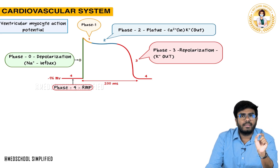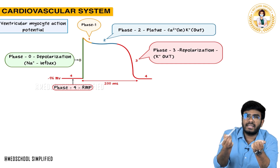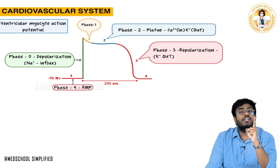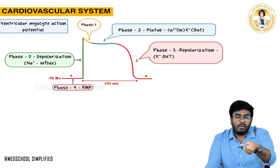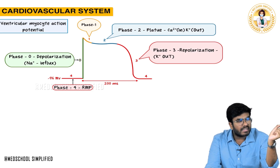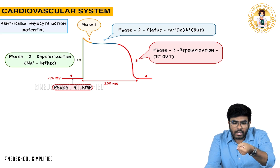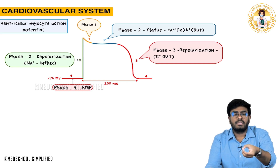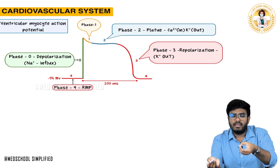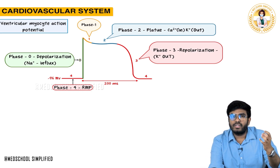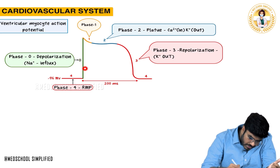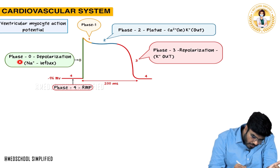Whenever the ventricular myocyte is stimulated and electrically activated, voltage-gated sodium channels open. They are sensitive to voltage. Whenever the electrical impulse hits the ventricular myocyte, voltage-gated sodium channels open. Sodium is more outside the cell and less inside, so automatically all the sodium starts to enter the cell — causing depolarization. This is because of the influx of sodium.